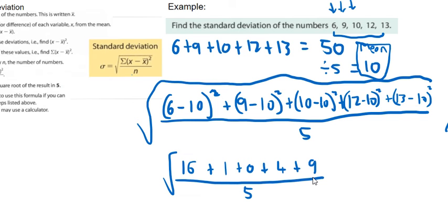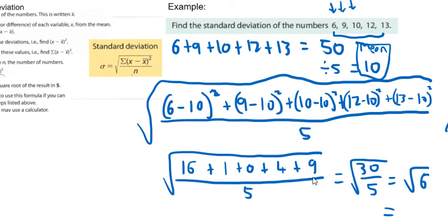So that simplifies it a lot. So 16 plus 1 is 17 plus 4 is 21 plus 9 is 30. So I get 30 on top when I add all those together over 5 and then I still have to do square root. So it's going to be the square root of 6. And when you put that into your calculator you should get something a little bit over 2.